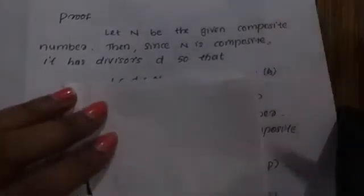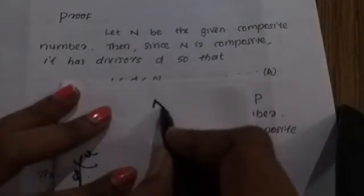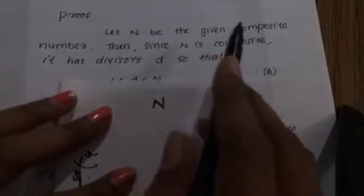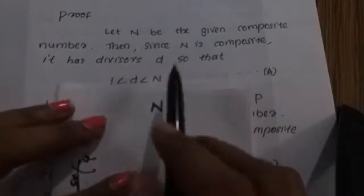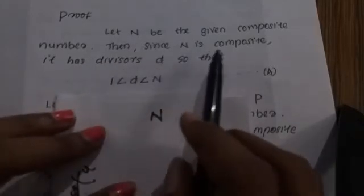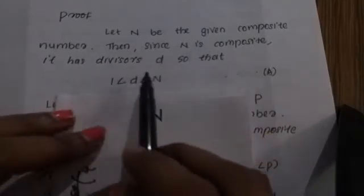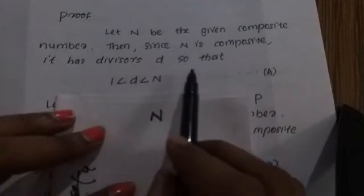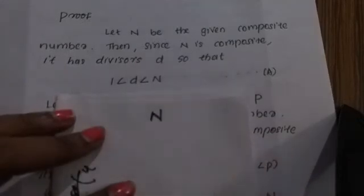Proof: First, we need to take a number n. Let n be a composite number. Since n is composite, it has a divisor d.